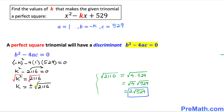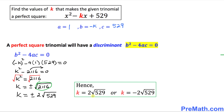Now let's simplify the square root of 2116. This simplifies to 2 times the square root of 529. So k turns out to be equal to positive or negative 2 times the square root of 529. And that is our answer.